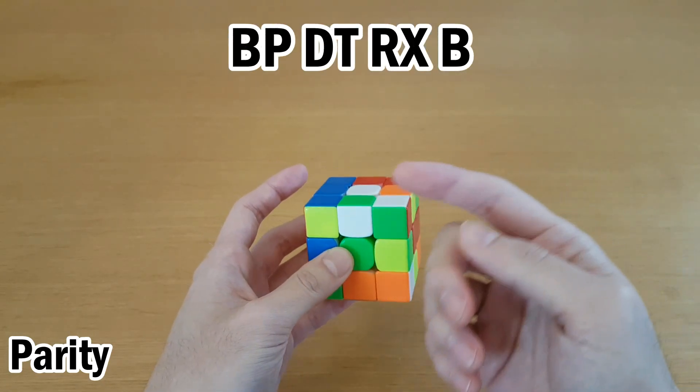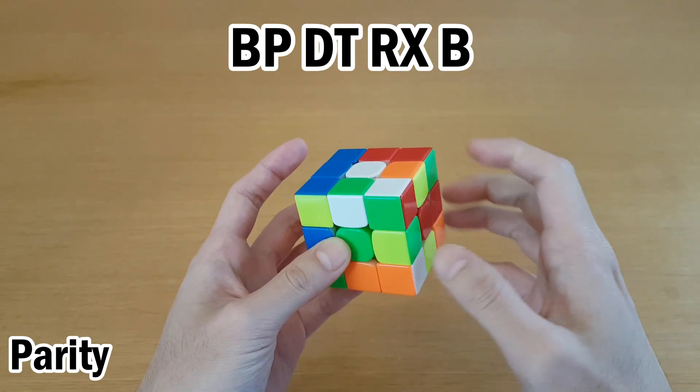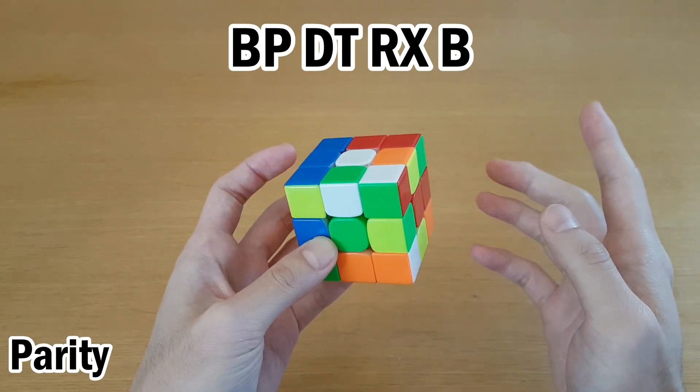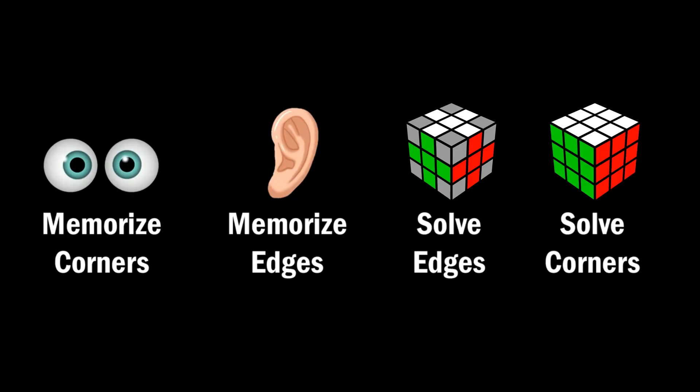In a scramble like this, after you memorize corners, in this case I use UFR as the buffer, if you get an odd number of letters, you have parity, and you have to memorize edges in a different way. So this is the order I'm using: memorize corners, memorize edges, solve edges, solve corners.